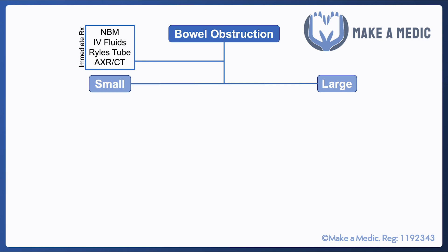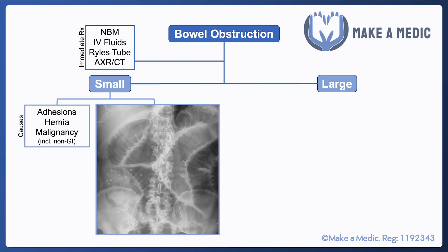The investigations requested are usually initially an abdominal x-ray and subsequently perhaps a CT scan to help figure out exactly where the transition point of the obstruction is.